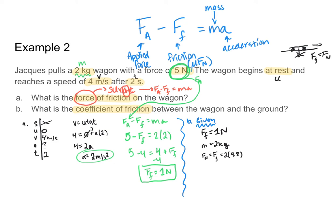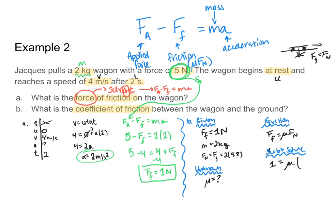My unknown is mu, the coefficient of friction. Using ff equals mu times FN: my force of friction is one newton, and my normal force equals mg, which is two times 9.8, or 19.6 newtons. So one equals mu times 19.6. Dividing both sides by 19.6, I get that mu is equal to 0.05. I don't include units because mu is a unitless quantity — frictional force and normal force are both in newtons, so they cancel out.